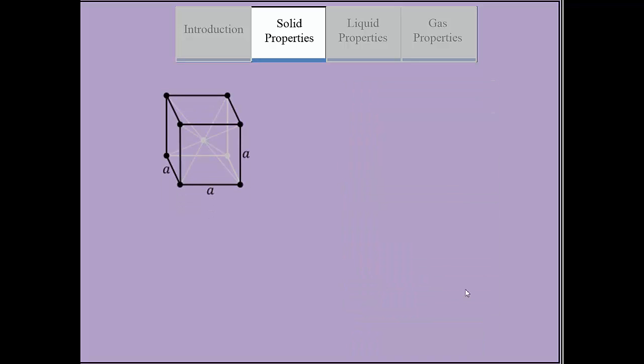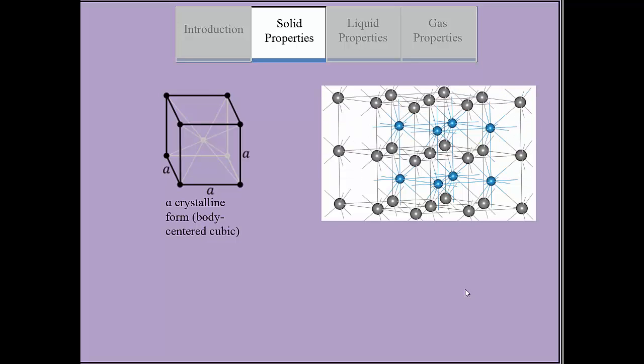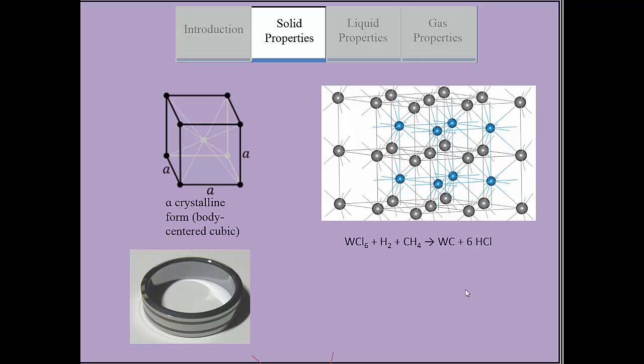Tungsten exists in two major crystalline forms, the alpha and beta forms. The alpha crystalline form is body-centered cubic, while the beta form is in an A15 phase. Tungsten carbide used in ammunition and jewelry takes on a hexagonal form and is approximately two times stiffer than steel.